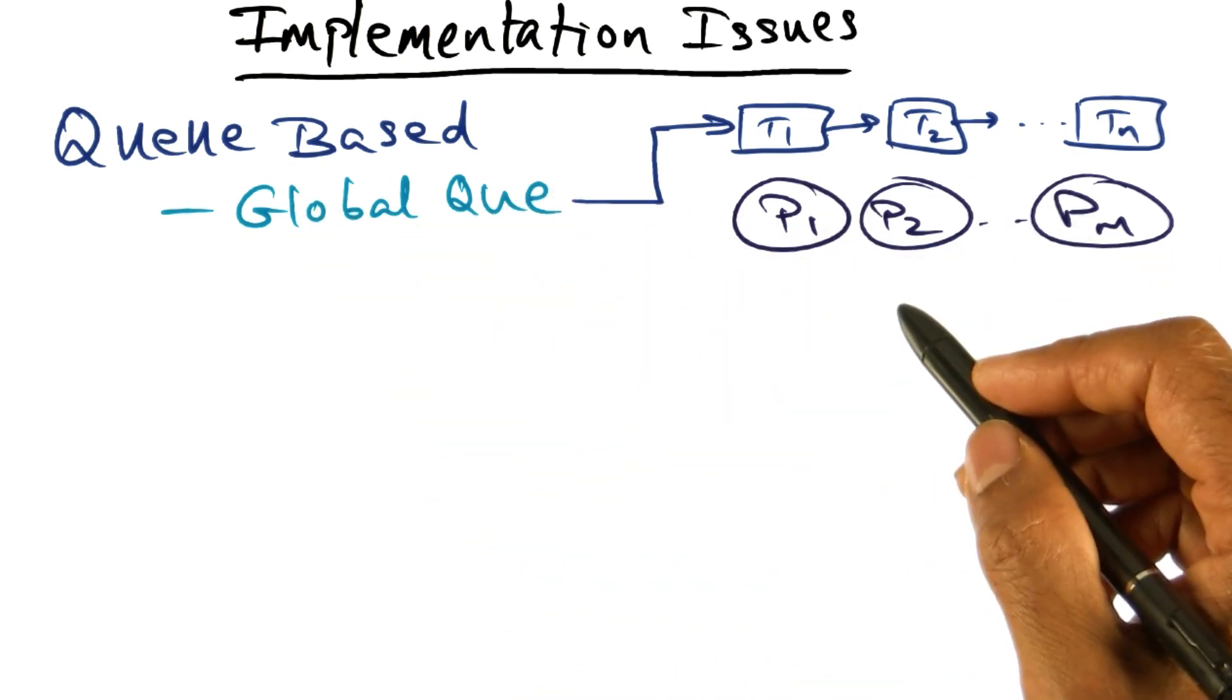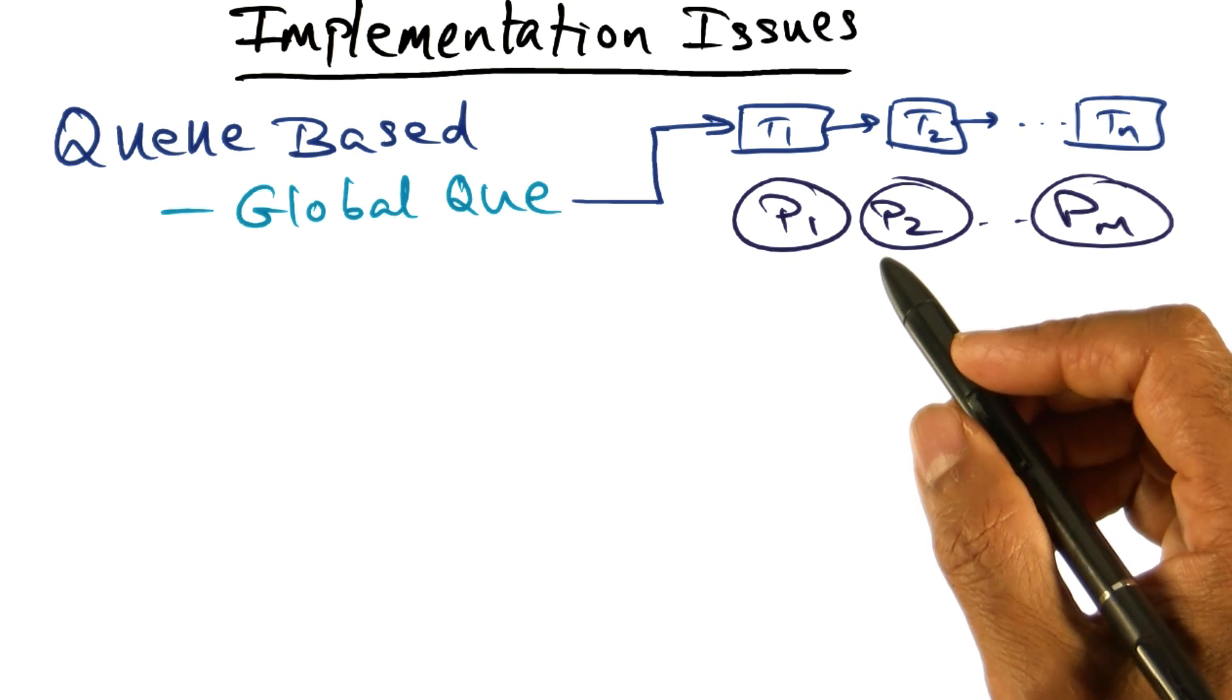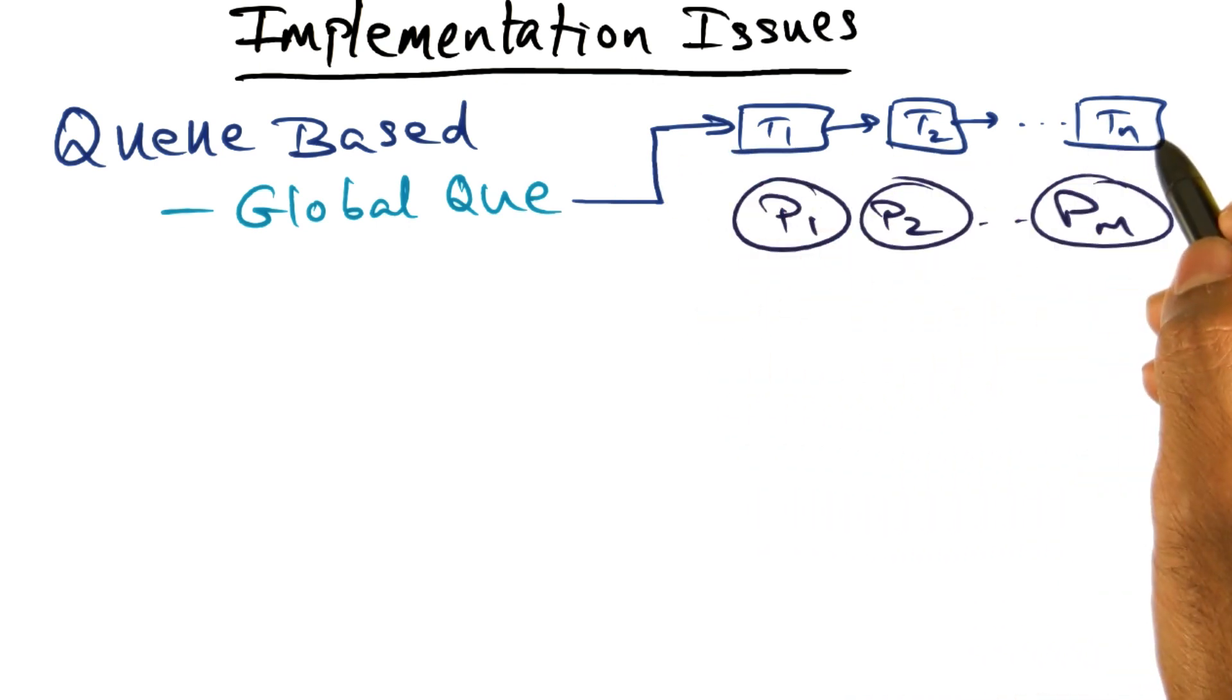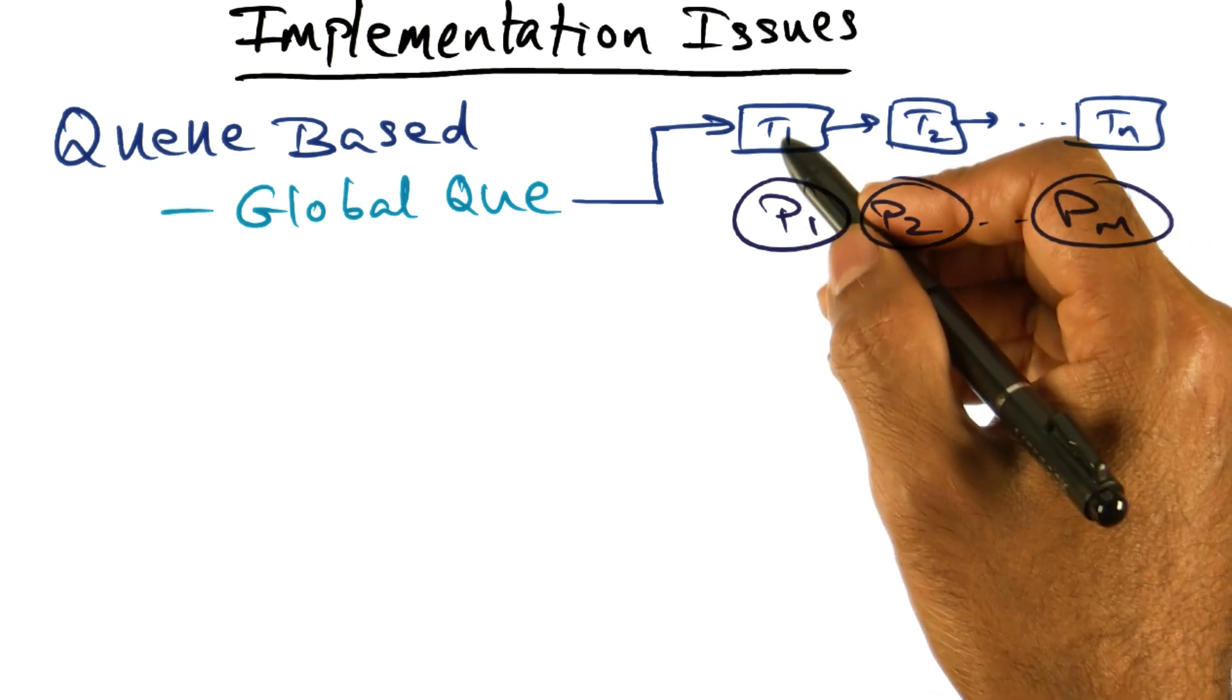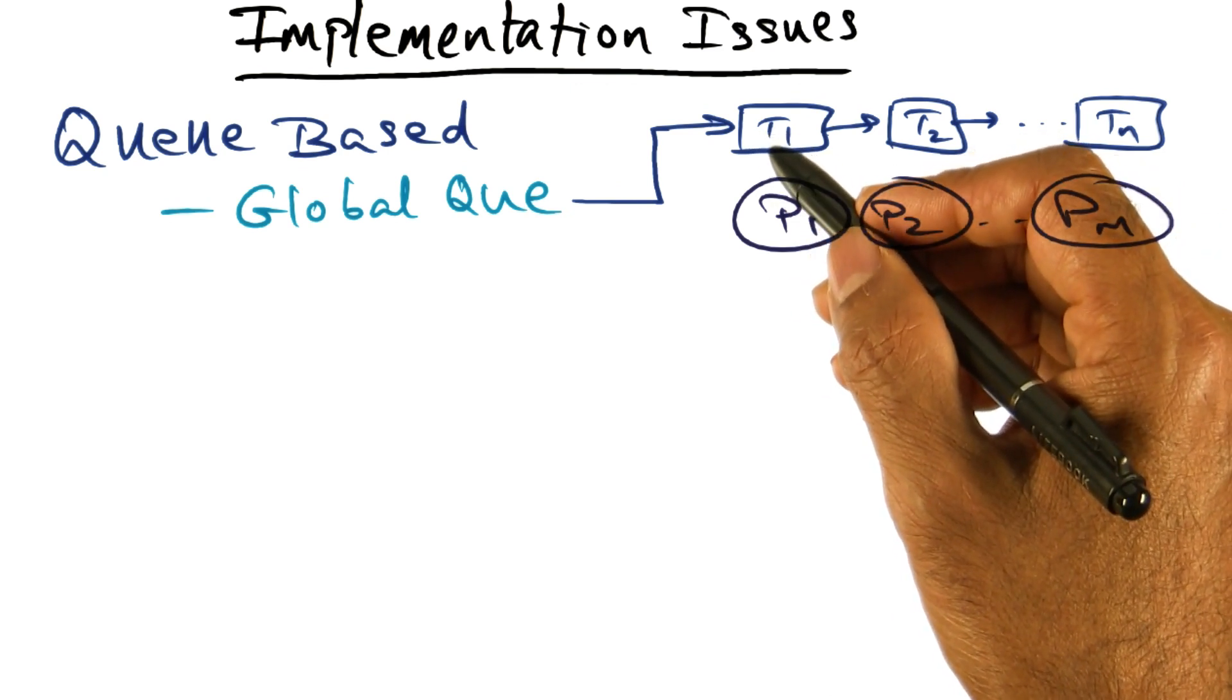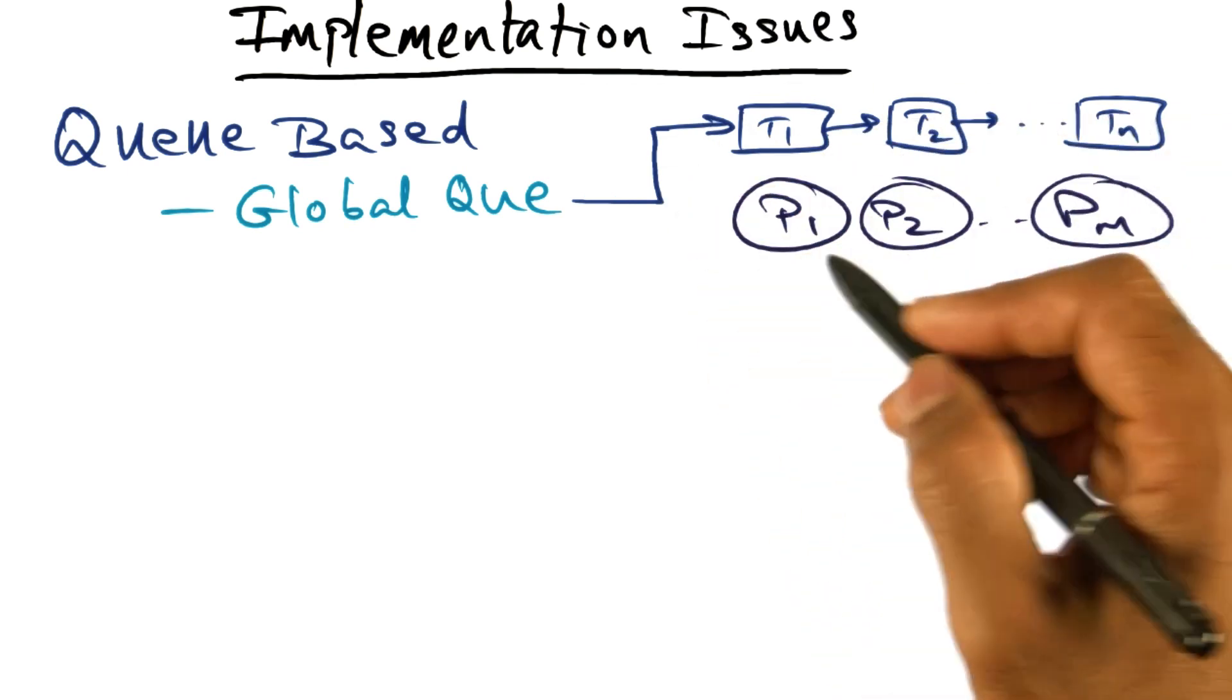And the way we organize the queues is orthogonal to the scheduling policy itself. But if the policy is something like FCFS, it makes logical sense to have a global queue and let the processors pick from the queue. The head of the queue is the earliest arriving thread, and therefore, first come first served policy may use this global queue policy.